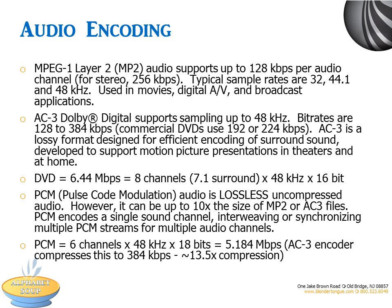AC3 Dolby Digital supports sampling up to 48 kHz and has bit rates up to 384 kbps. AC3 is a lossy format designed for efficient encoding of surround sound, developed to support motion picture presentations in theaters and at home. Commercial DVDs use 192 or 224 kilobits per second bit rates. A DVD amounts to 6.44 megabits per second and 8 channels of 7.1 Dolby surround sound.